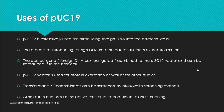During transformation, the plasmid DNA enters the bacterial cell, where it can replicate due to the presence of the ori site. The desired foreign DNA can be ligated into the PUC19 vector and introduced into the host cell. PUC19 is used for protein expression as well as other studies. The screening method used is blue-white screening, making use of X-gal along with the lacZ gene, which will be explained in detail in the next video.